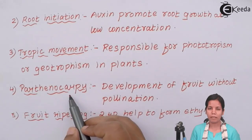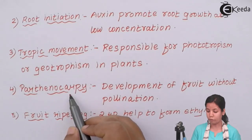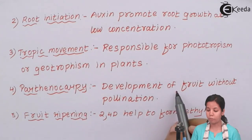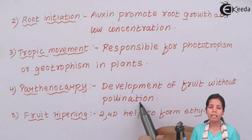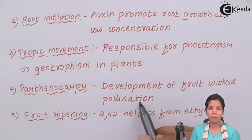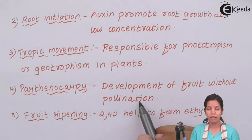Parthenocarpy is the development of a fruit without pollination or fertilization. An example is the banana — auxins help in that process. Without the fusion of male and female gametes, the banana is formed.